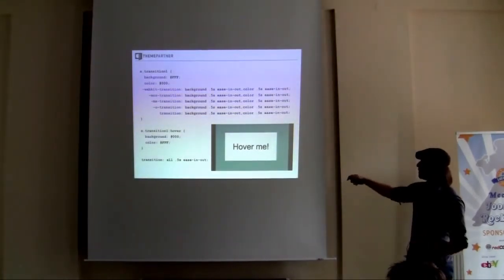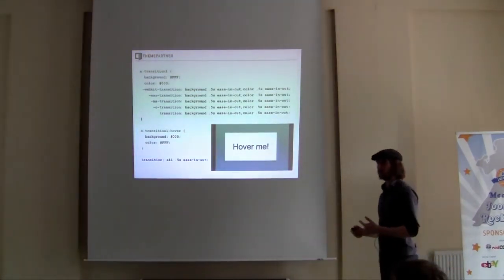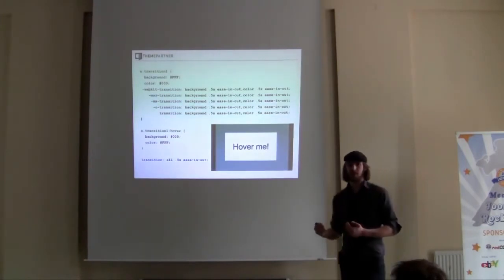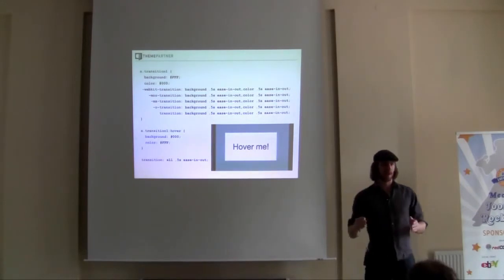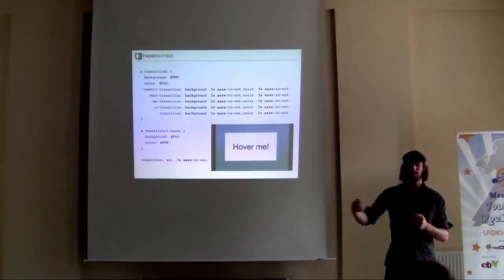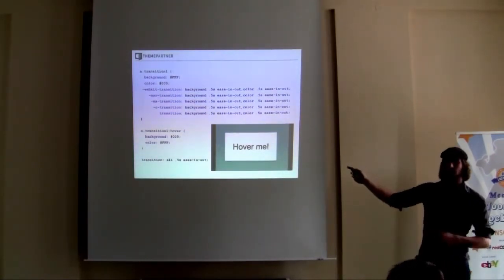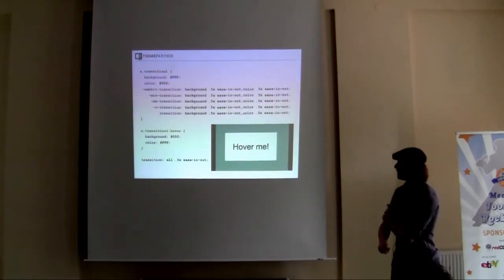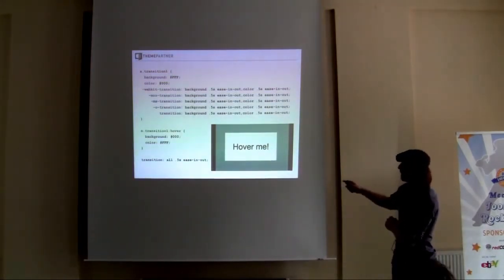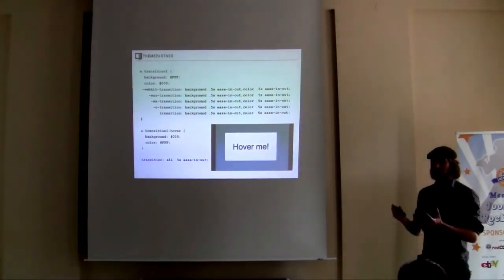I always like to put 'all' in the transition because it looks really weird if half the properties animate fluidly over half a second while other things change instantly. For example, if I change only the background but don't include the color in the transition, you'd first see a white text on a white block and then suddenly it goes to black. I had a video example to demonstrate this but unfortunately it's not working on this laptop.